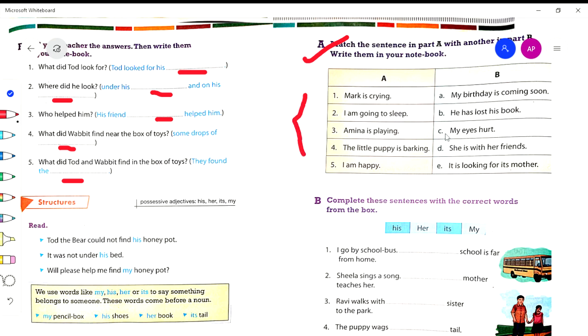So let's just quickly discuss this section. Here we have Part 1 and Part 2. Match is crying because he has lost his book. I am going to sleep, my eyes hurt. Amina is playing. The little puppy is barking. It is looking for his mother. I am happy because my birthday is coming soon.